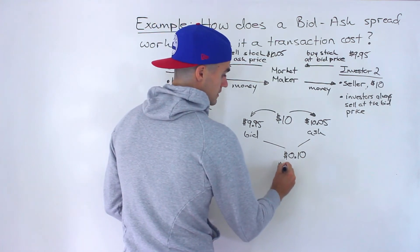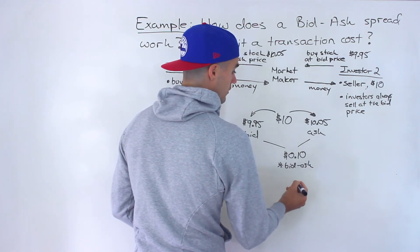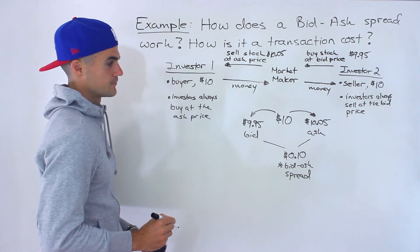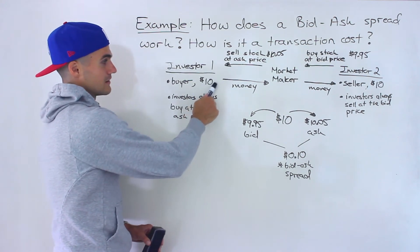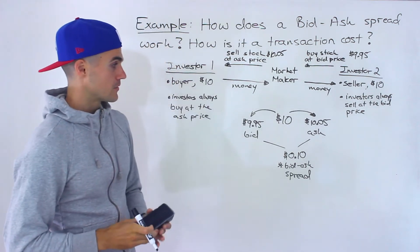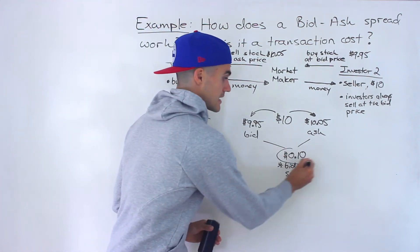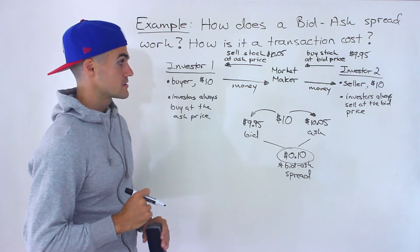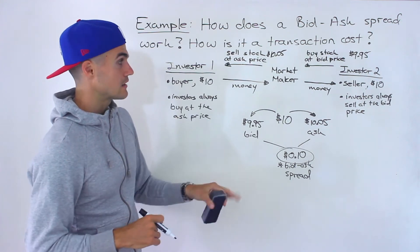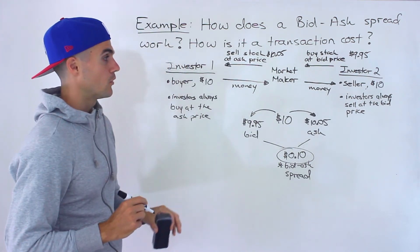The market maker bought at $9.95 and sold at $10.05, making $0.10 on that transaction. This is the bid-ask spread — the difference between the ask price and the bid price, where the ask is always greater than the bid. In this case, the bid-ask spread is $0.10. You bought at a price higher than market price; the seller sold at a price lower than market price. That spread — that $0.10 — is the transaction cost that goes to the market maker for providing the service and compensating them for taking on risk.